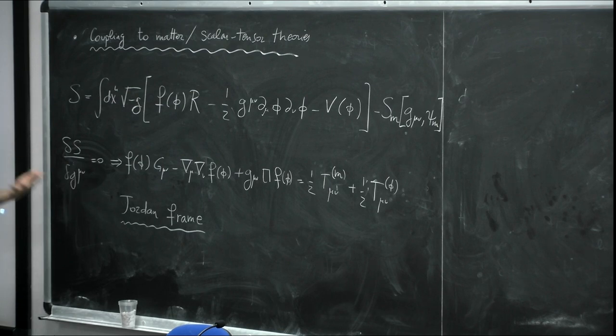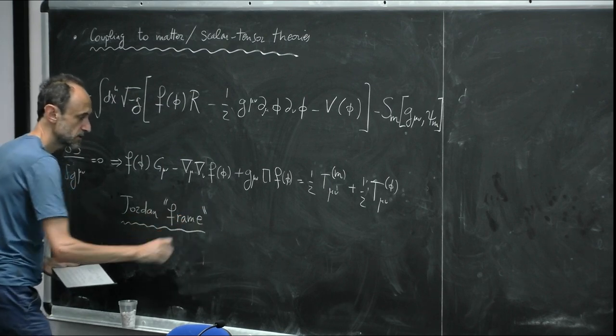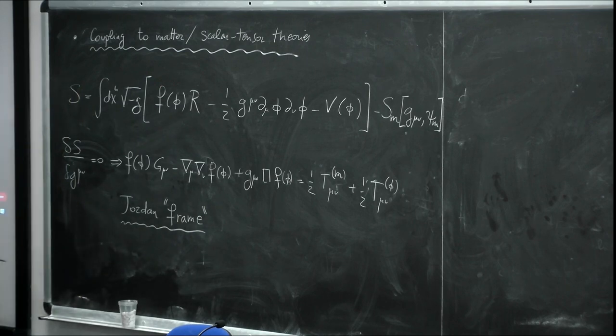We can change to a different field description — the Einstein frame — by making a conformal transformation of the metric.